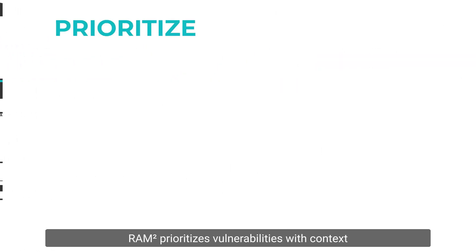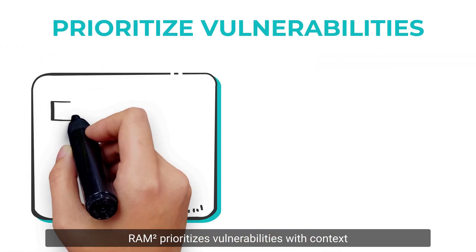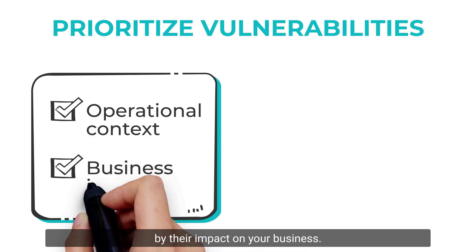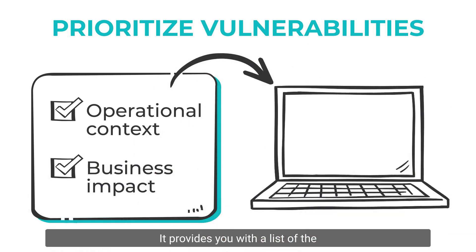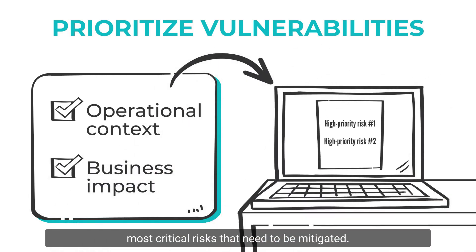RAM Squared prioritizes vulnerabilities with context by their impact on your business. It provides you with a list of the most critical risks that need to be mitigated.